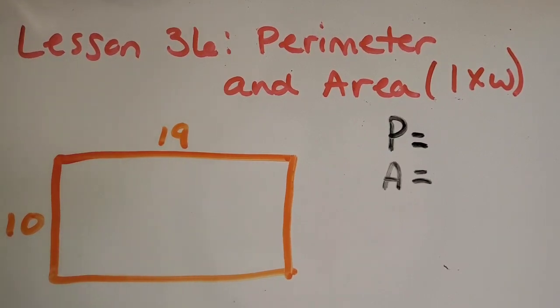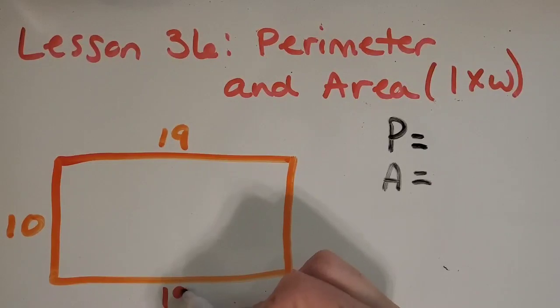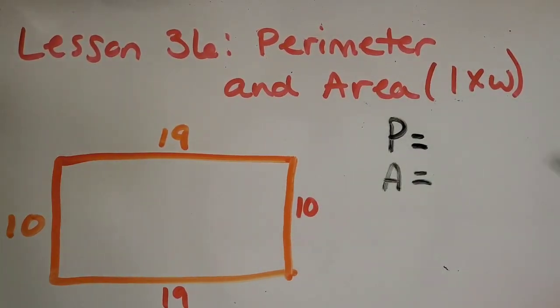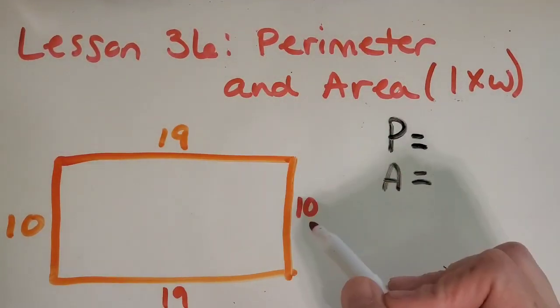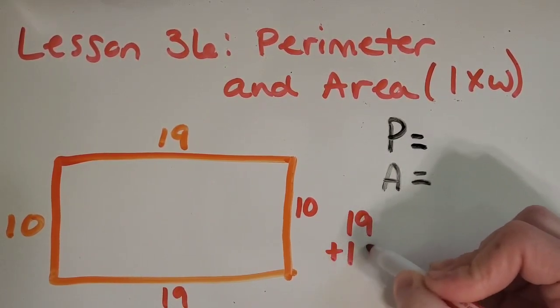So now we can take a look at this second example. And I went ahead and drew the rectangle that we built and the length is 19. The width is 10. And so now I want you to work on finding the perimeter. Pause the video and see if you can figure out the perimeter. Let's check your work. So I'm seeing that we need all four sides labeled just like last time.